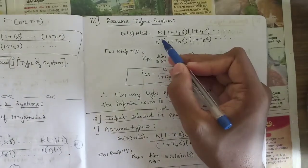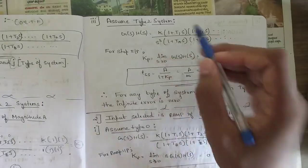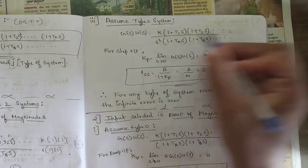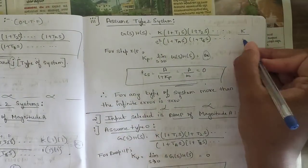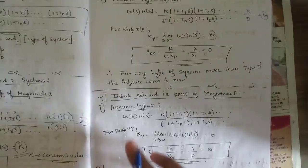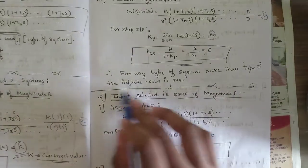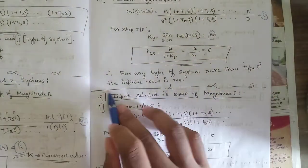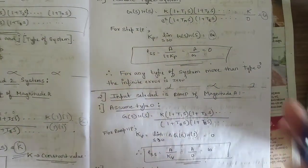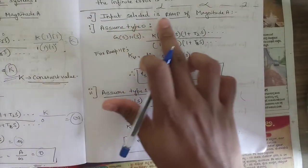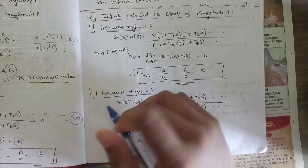So for any system of Type 1 or higher with a step input, the steady-state error is zero. Only a Type 0 system has a finite steady-state error of A/(1+K) for step input. Now consider the second case where the input is a ramp of magnitude A, and we use the velocity error coefficient Kv = lim(s→0) s·G(s)H(s).